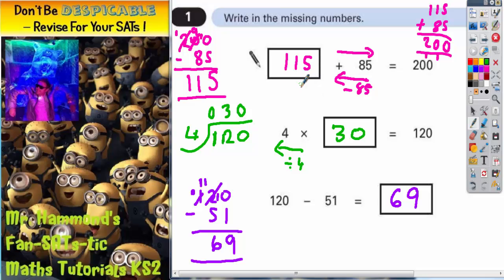So there's your answers. 115 in the first box, 30 in the second box, 69 in the last box.